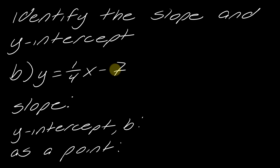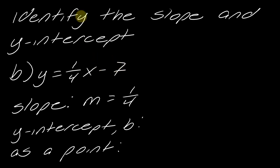Let's look at another example: y equals one fourth x minus seven. What's in the slope position — what's attached to x? That's one fourth, so m equals one over four. Now what's in the b position? It's not just seven, but all of negative seven. If it's positive you leave it positive, if it's negative you keep it negative. So negative seven is my y-intercept, meaning the point zero, negative seven.